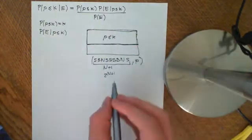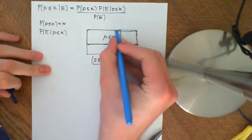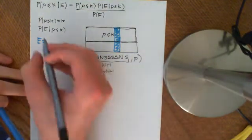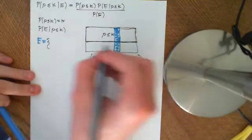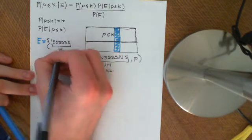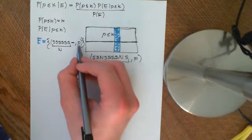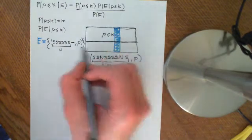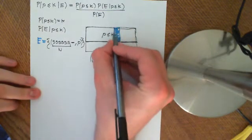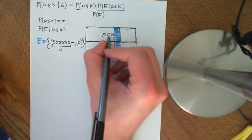What we're doing now is limiting this sample space to all those outcomes where the parameter P is less than or equal to K. All those outcomes where P was greater than K are excluded. The event E, denoted in blue, is the event that the sun rose on the first N days. It consists of all outcomes where you had sun rising N times, and we don't care what happens on the N plus 1 trial or what the P value is.